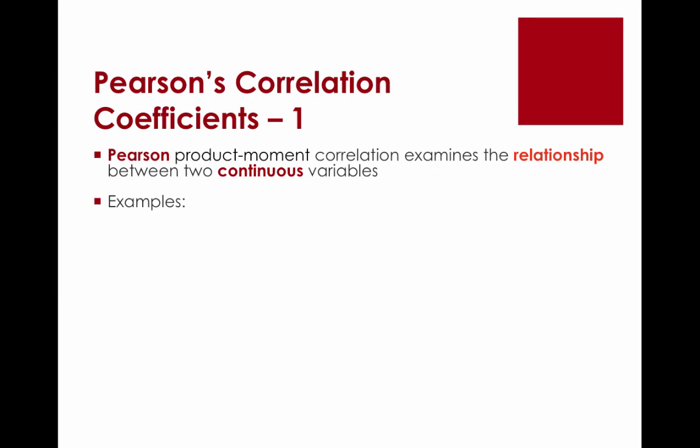Pearson's product-moment correlation coefficient is used when we want to examine the relationship, the connection, the correlation between two continuous variables. Thinking about continuous — this is essentially interval-ratio variables, when both of our variables are interval or ratio.